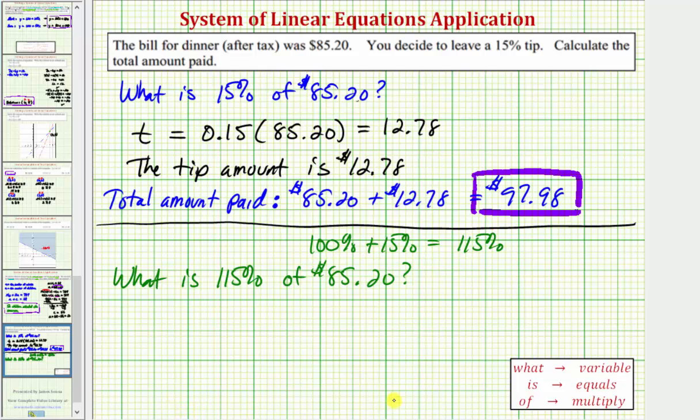So again, writing a percent equation, the first word we see is what, which represents the unknown. This time let's use the variable a for the total amount paid. And then we have is, which means equals. 115% as a decimal would be 1.15.